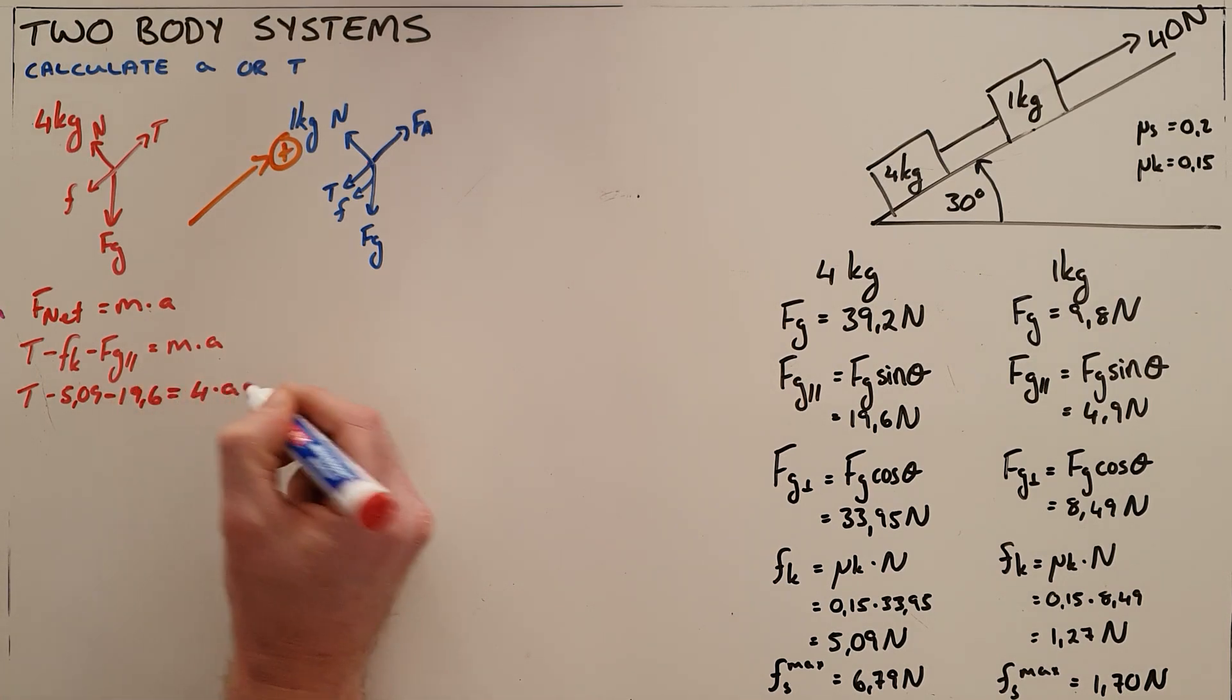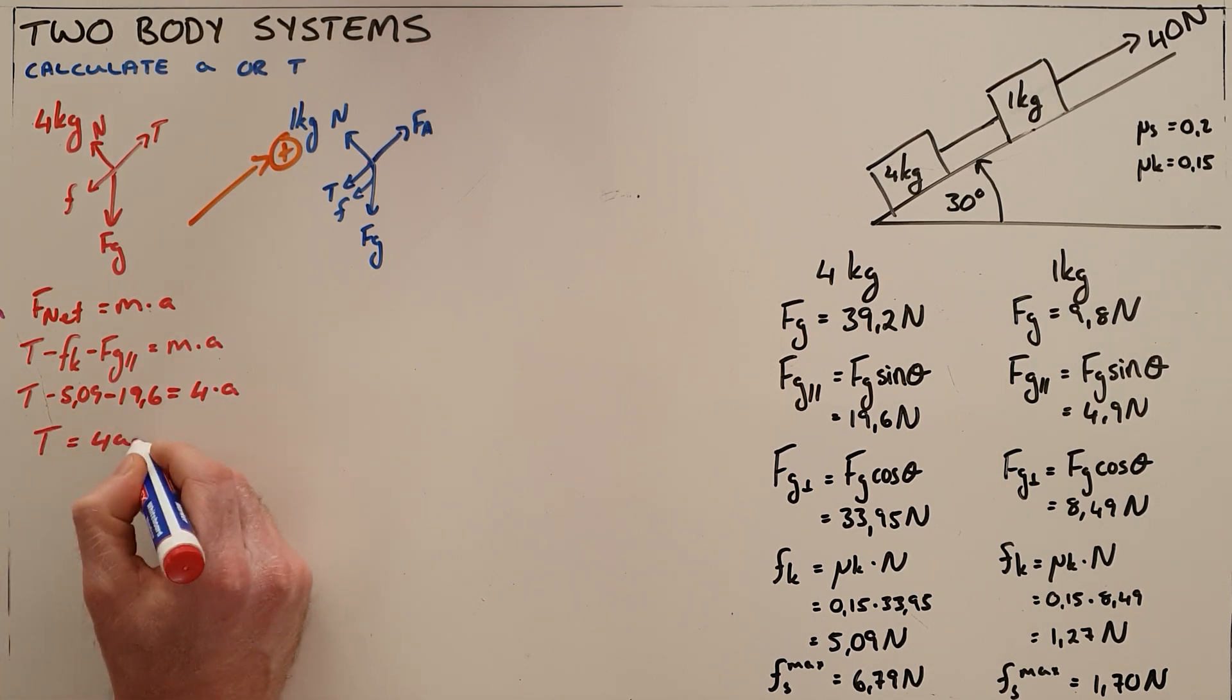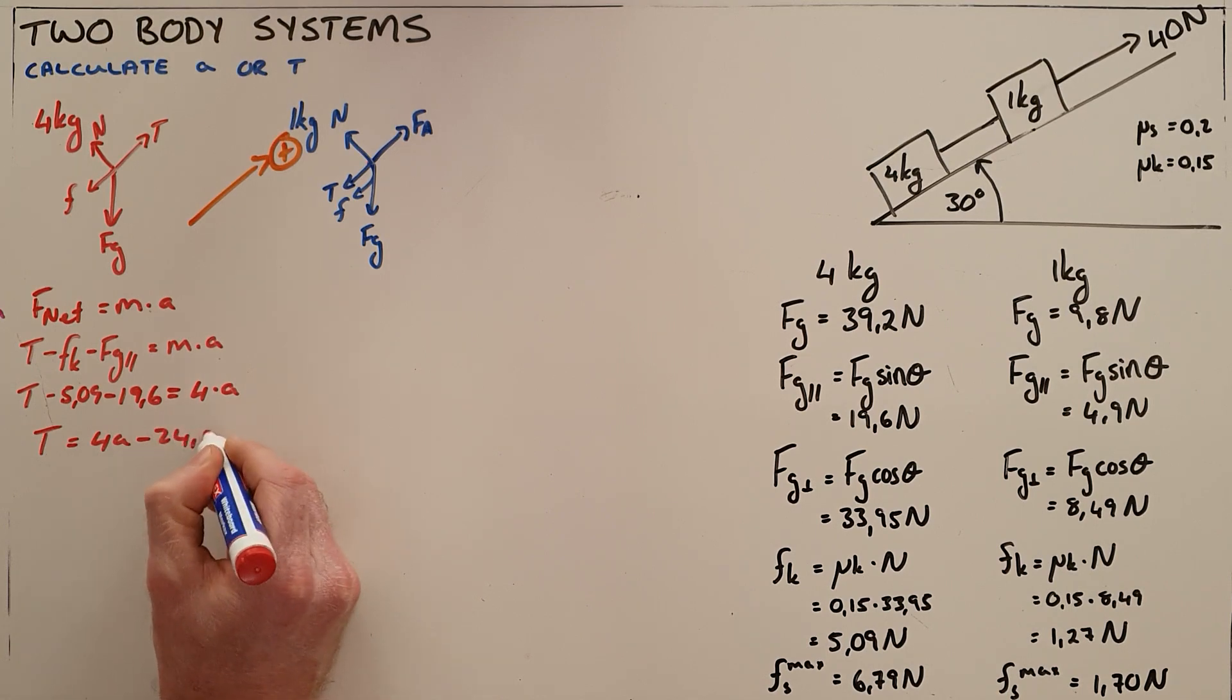The mass of this object is 4 kilograms. And so I reach an expression here which says that T is equal to 4a minus 24.96.